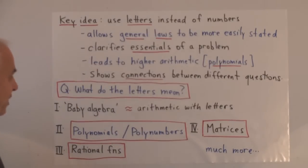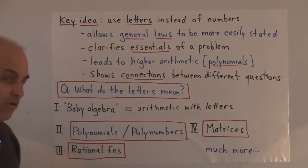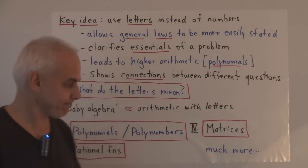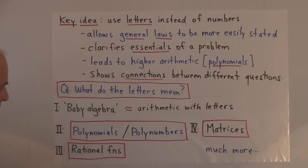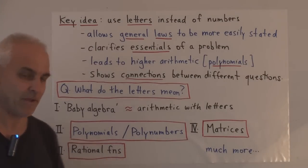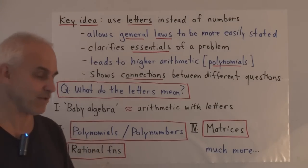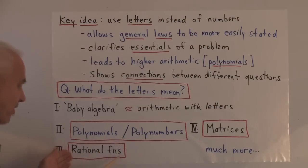Okay, so we're going to roughly follow a program like this to start off with. First, we're going to talk about what we might call baby algebra, which is more or less arithmetic with letters. And then we're going to move on to polynomials. And I'm going to introduce things called polynumbers, which are very closely related to polynomials, but have some interesting advantages.